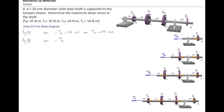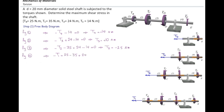For figure 3: negative T2 minus Tc (35) plus 24 minus 14 equals zero, giving T2 equal to negative 25 N·m. For the last figure: negative T1 plus 25 minus 35 plus 24 minus 14 equals zero, giving T1 equal to zero. That makes sense because the last shaft is free — it is not supported by anything, so the torque on that side should be zero; otherwise the system would not be in equilibrium.